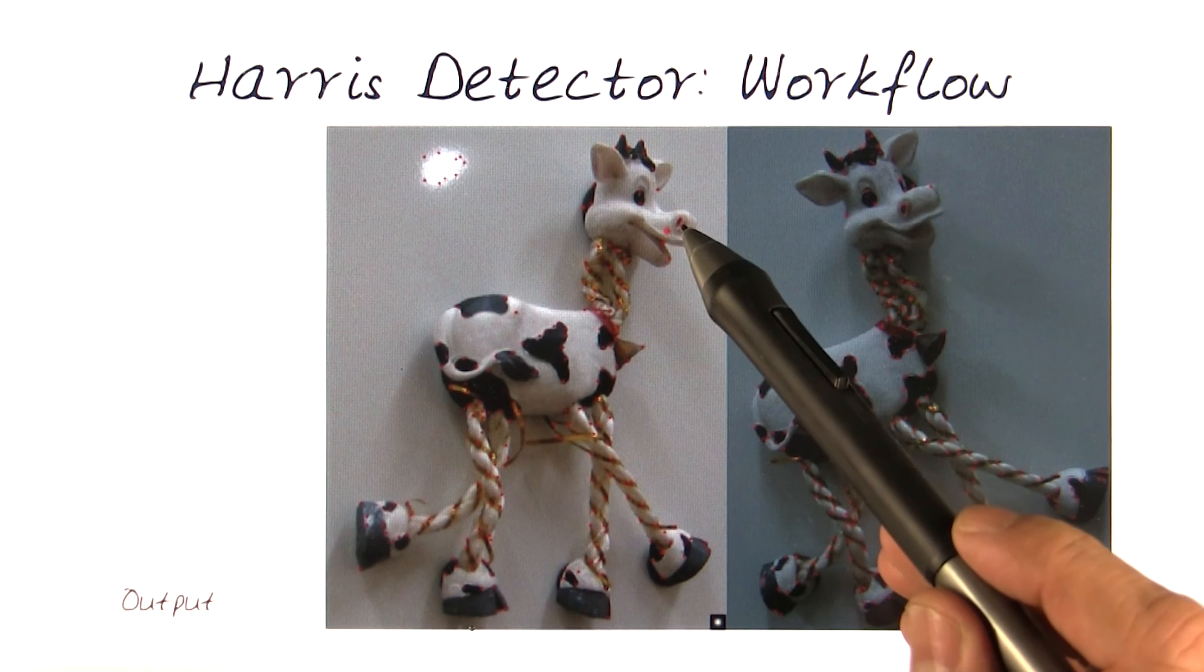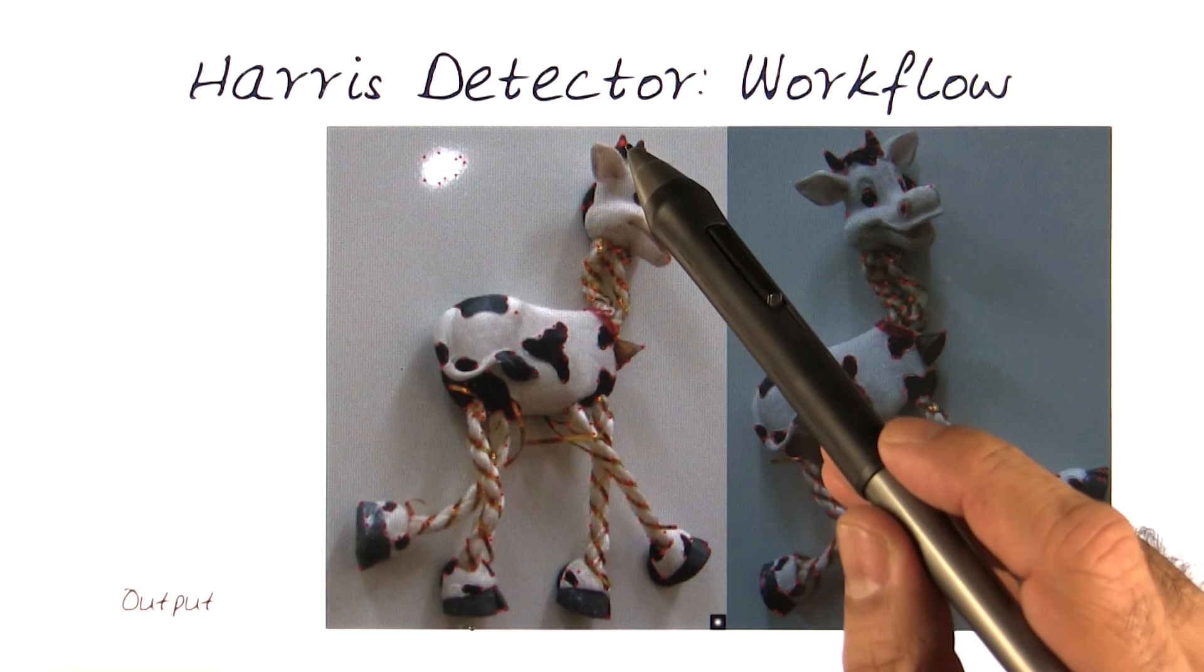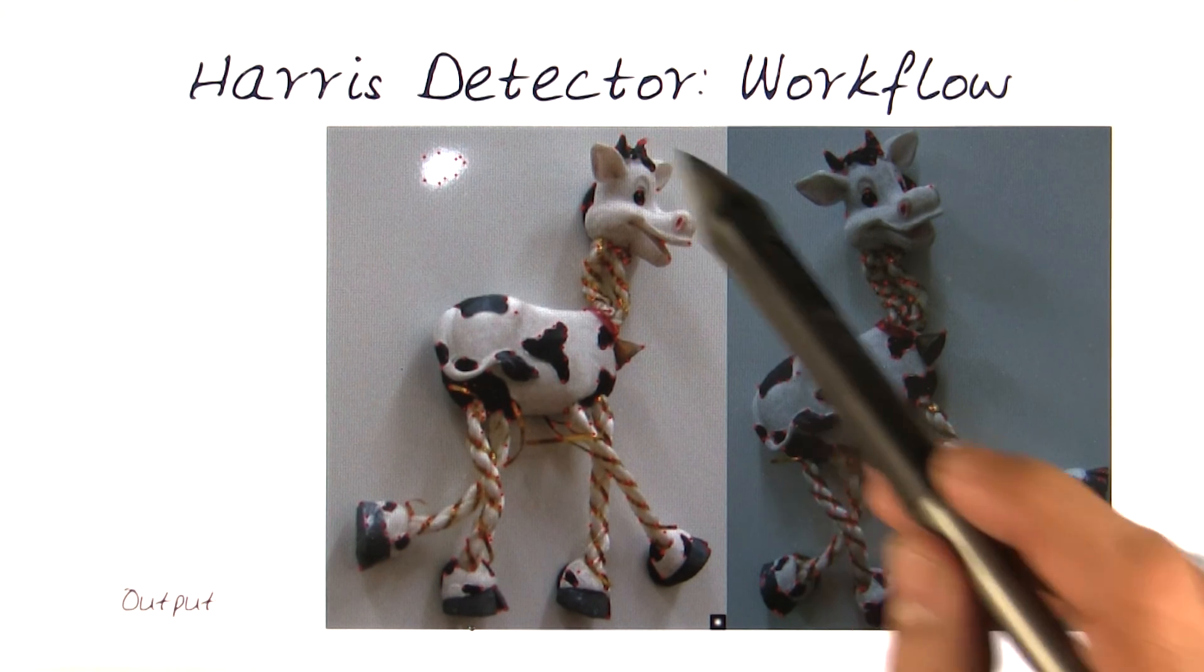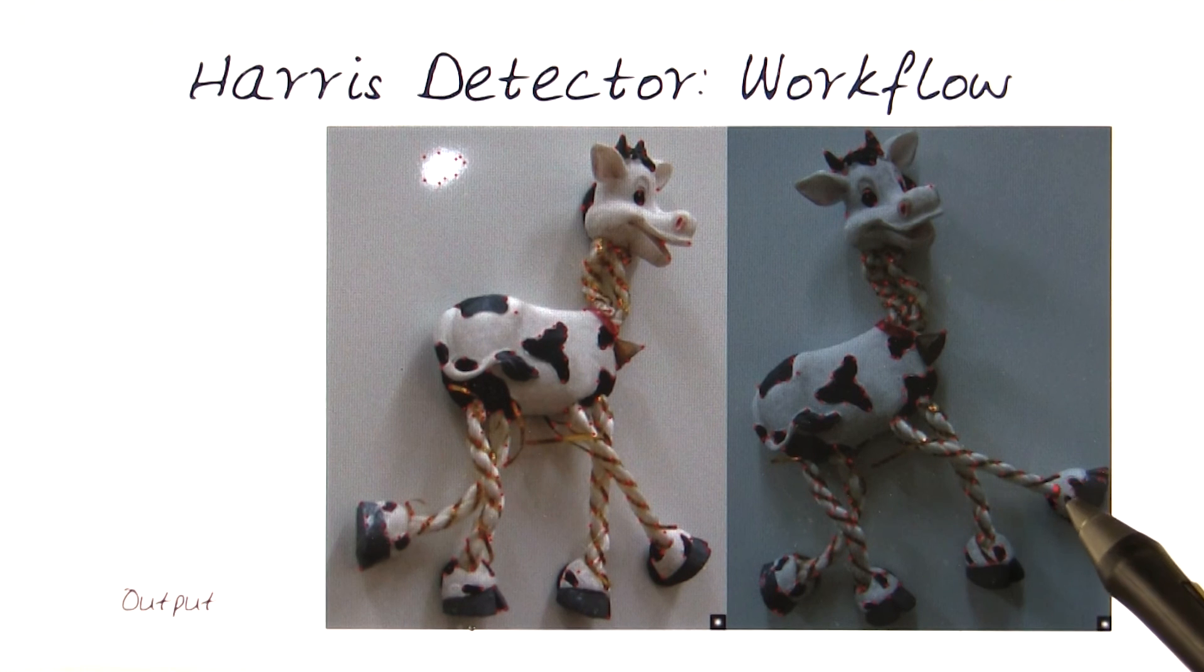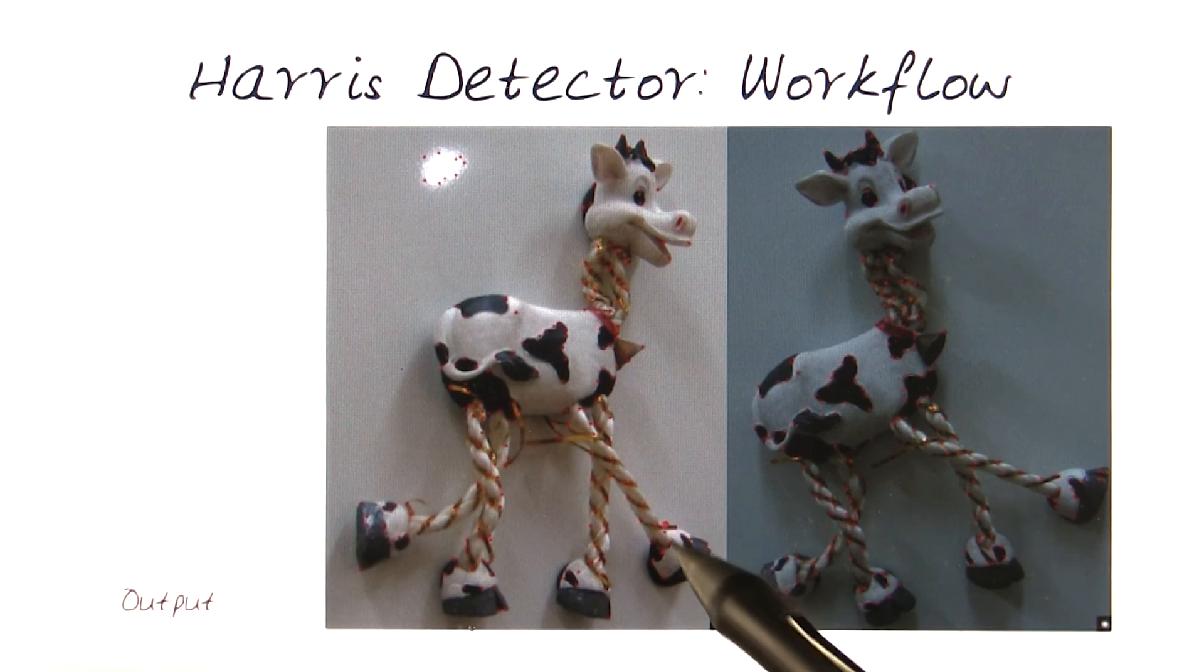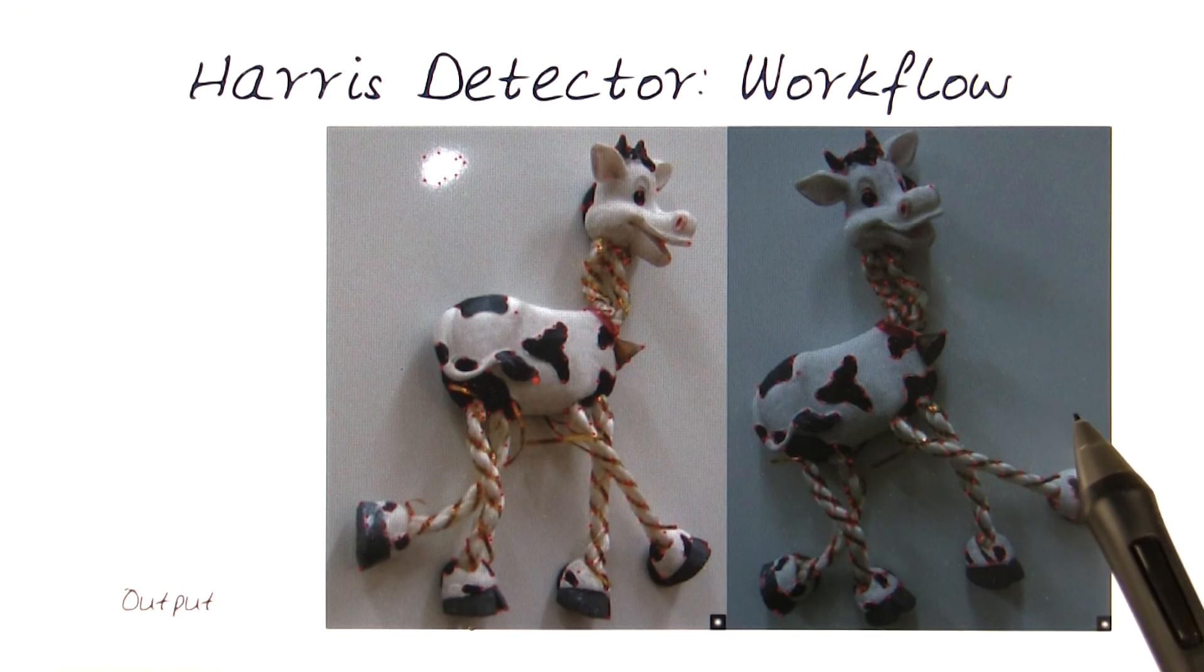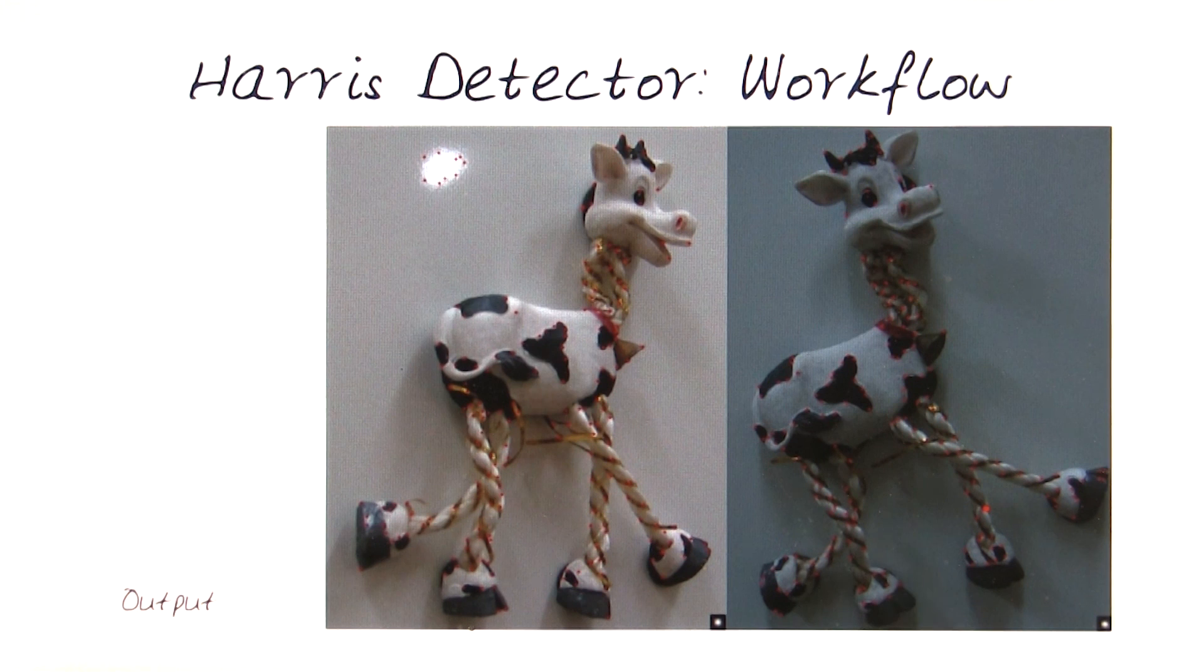But you can see, for example, there are some features at the nose. There are some features at the tips up there. And you can see similar features. And actually, now you can start seeing that it found features here and here. And also found features, for example, here and there, here, even though the image is a little darker. So this is the output we're looking at. We want to find features like this. That's what we want to do with Harris detection.